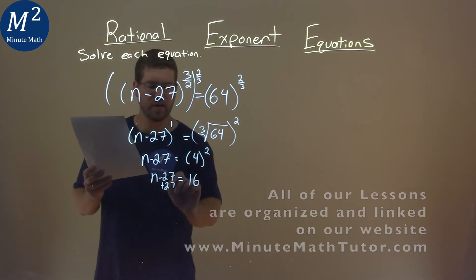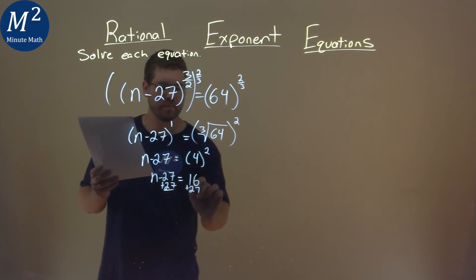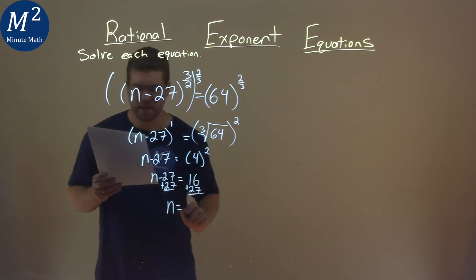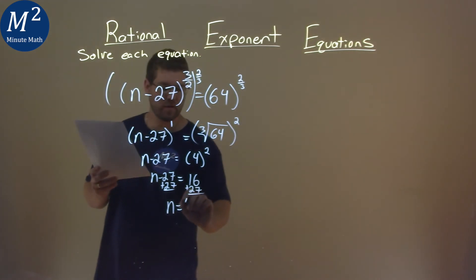I add 27 to both sides here, and we have n by itself, and 16 plus 27 is 43.